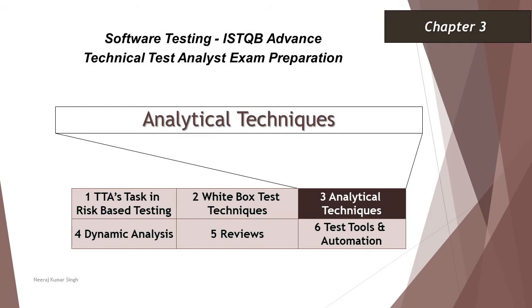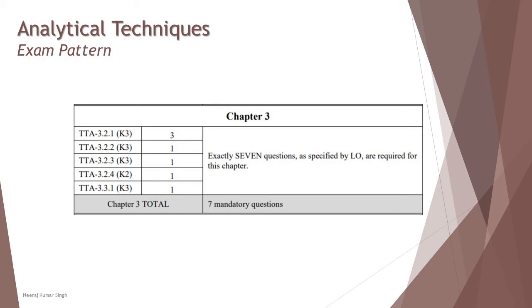The very first thing here we are talking about is exam pattern, like what kind of questions or what number of questions you will be expecting. If you see right now on the screen, Chapter 3 consists of 7 mandatory questions where 6 questions are at K3 level and one from section 3.2.4 is at K2 level. So you have 6 K3 questions and 1 K2 question from this chapter, putting together 7 mandatory questions.